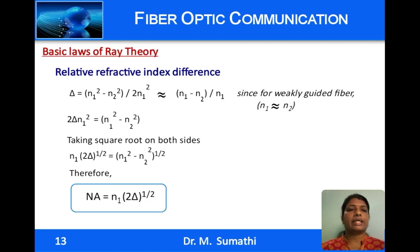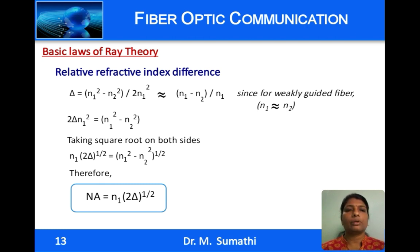The relative refractive index difference Δ is given by Δ = (n1² − n2²) / (2n1²). Rearranging and taking square roots gives numerical aperture = n1 √(2Δ). For weakly guided waves where n1 ≈ n2, Δ ≈ (n1 − n2) / n1.